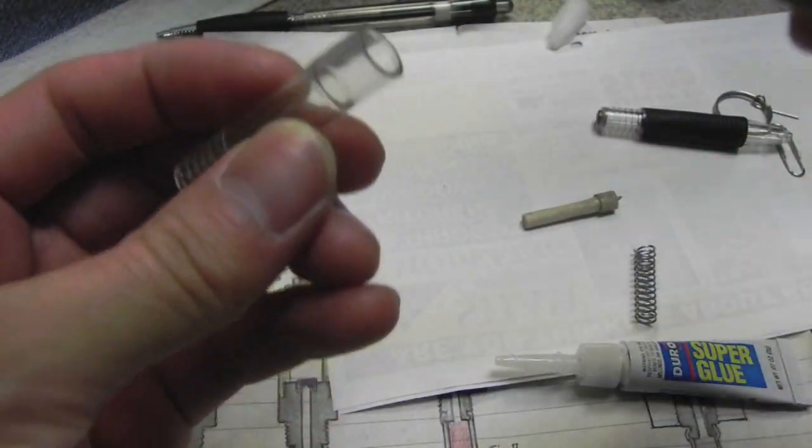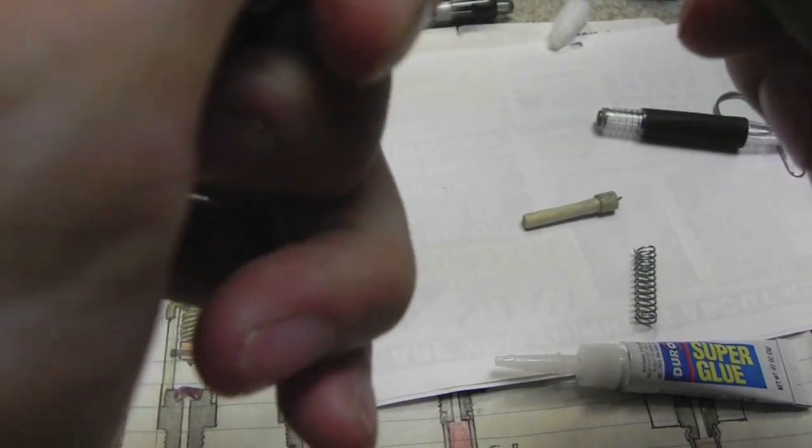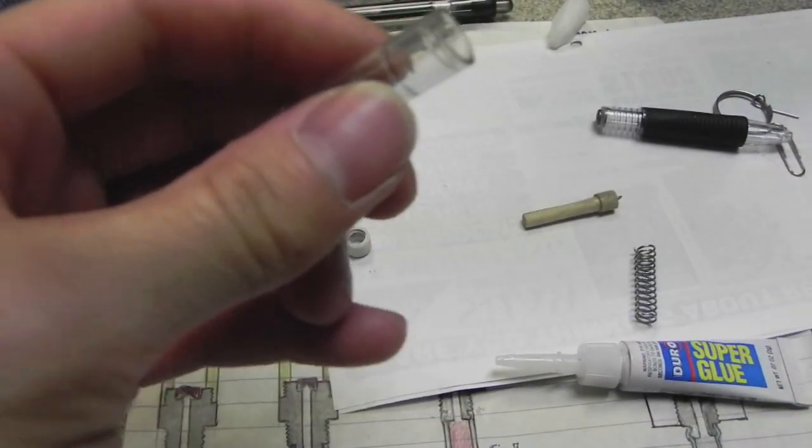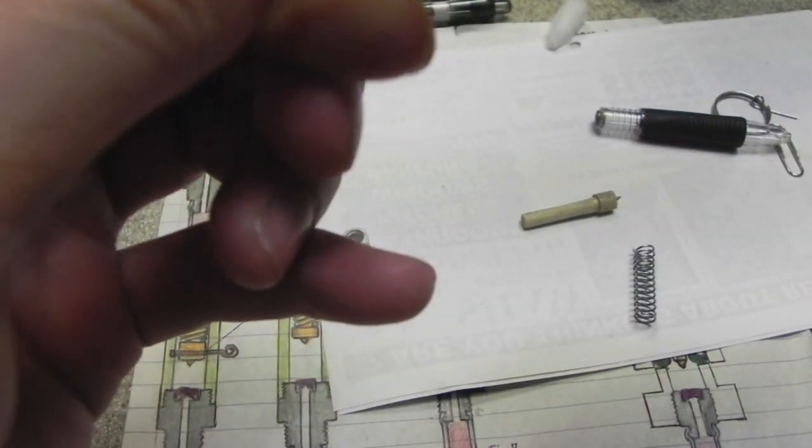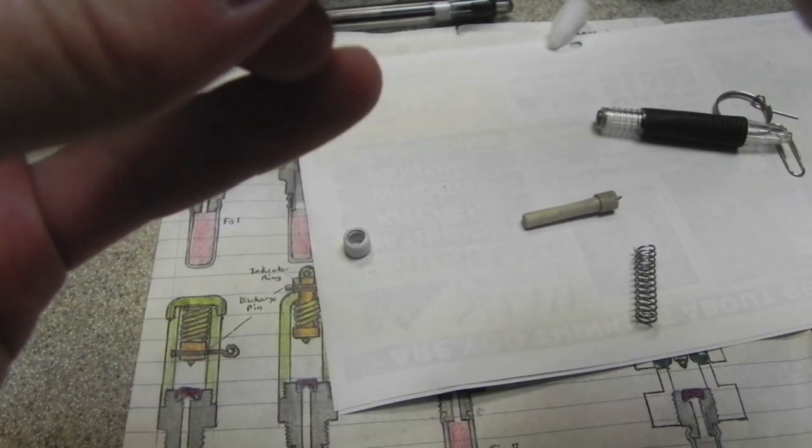And also, it might be a good idea to scratch up the contact surface of where you're going to glue, just so that the glue will adhere better onto the surface.